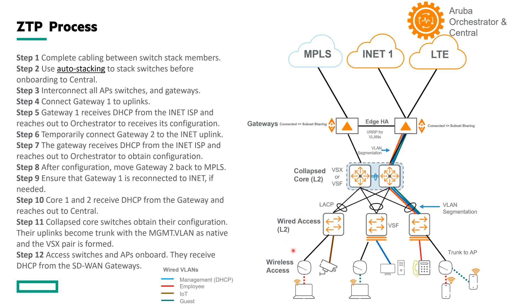Finally, the wireless AOS 10 access points will reach out to Central and receive their configuration. This is the most simplistic step because all of the upstream infrastructure has already been established. And that's the entire ZTP process end-to-end.